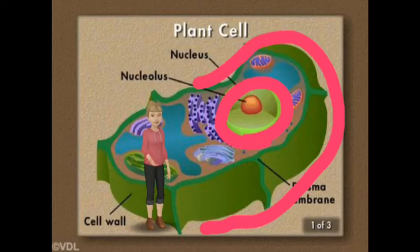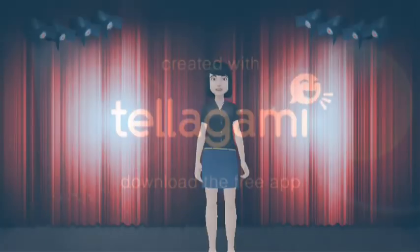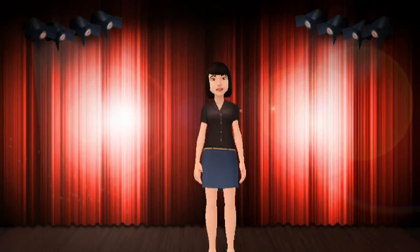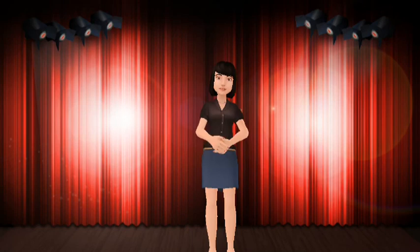Right behind me is a long green object. That's the chloroplast. You won't find that in an animal cell either. I've now seen both a plant and an animal cell. Can you tell me one thing they have in common, as well as one of the differences?